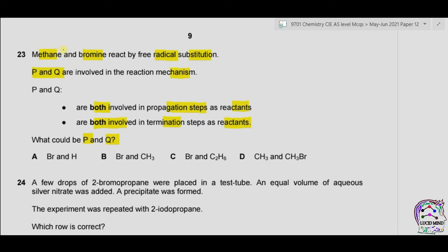For the bromination of methane, we can divide the steps into three parts. The first is initiation, in which a radical is formed — bromine converts into bromine radicals.